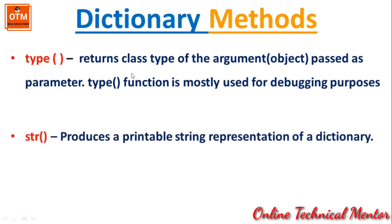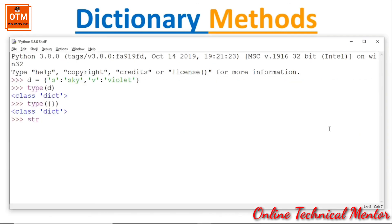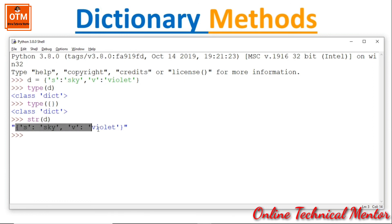Next, the str() function produces a printable string representation of a dictionary — it converts the whole dictionary to a string. For example, str(D) returns the dictionary enclosed within double quotes and it is treated as a simple string, not a dictionary. So this is all for this video. Thank you.